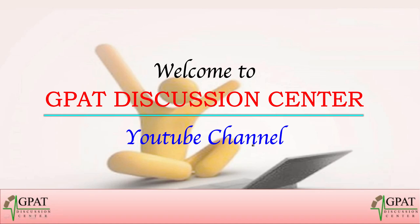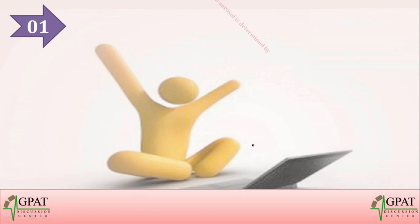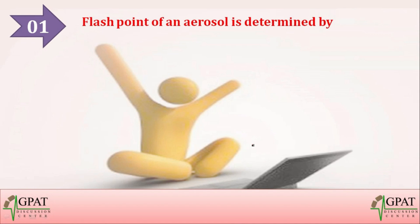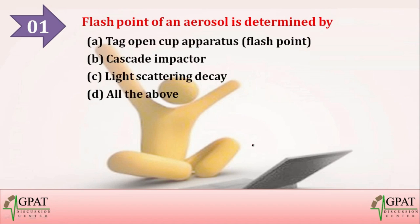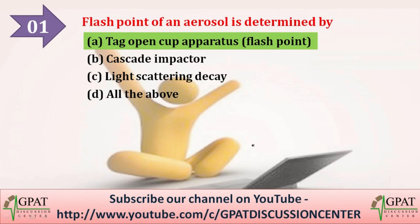The first question is: flash point of an aerosol is determined by — option A: Tag open cup apparatus, option B: cascade impactor, option C: light scattering decay, option D: all of the above. The correct answer is option A — the Tag open cup apparatus is used to determine the flash point of an aerosol.